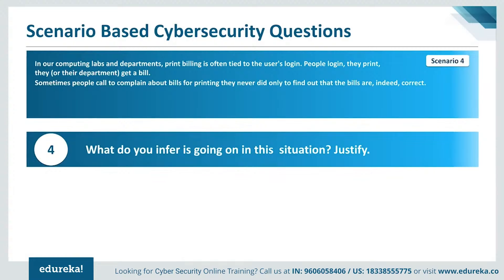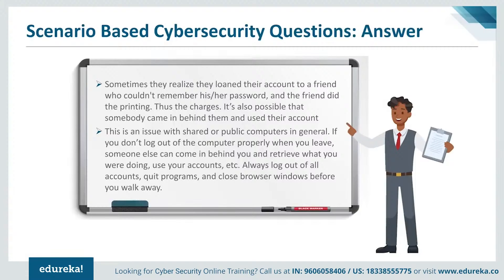Scenario 4: In computing labs, print billing is tied to user logins. Sometimes people call to complain about printing bills they never incurred, only to find the bills are correct. Sometimes they realize they loaned their account to a friend who forgot their password, and that friend did the printing. It's also possible someone came in after them and used their open account. This is an issue with shared or public computers — if you don't log out properly, someone else can access your account. Always log out of accounts, quit programs, and close browser windows before leaving a public computer.